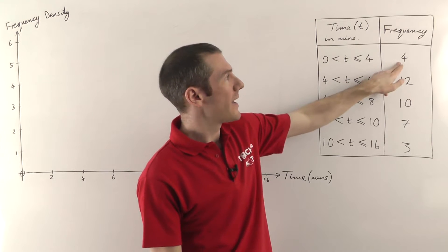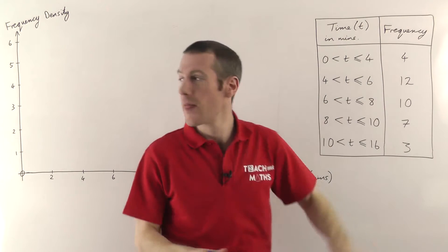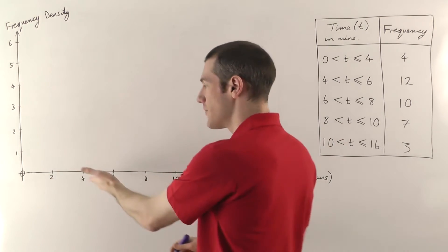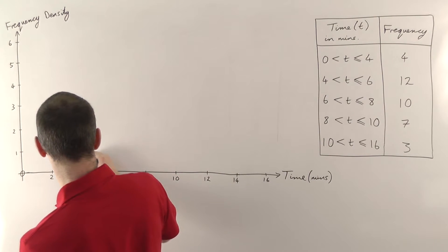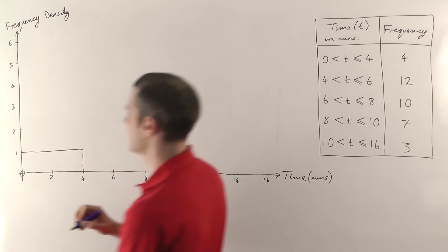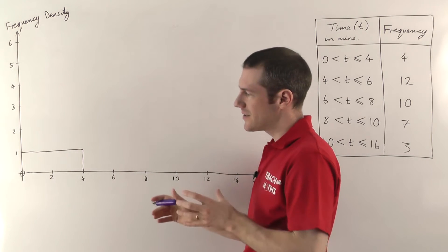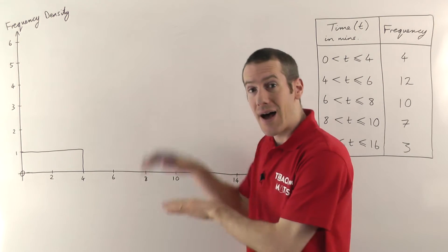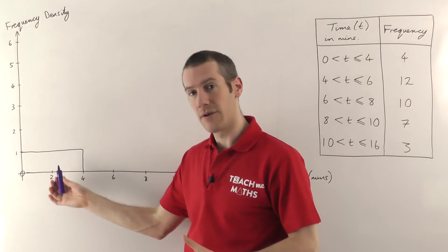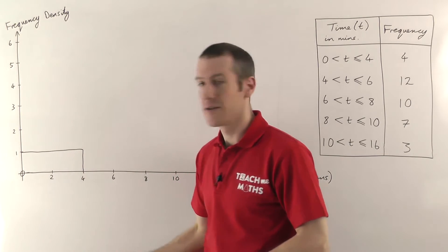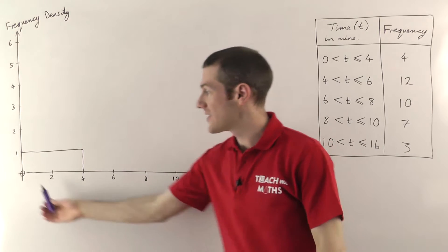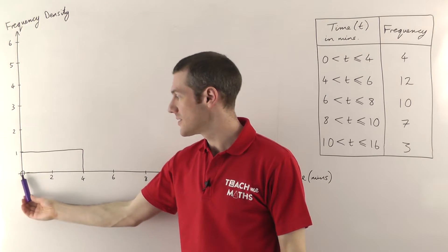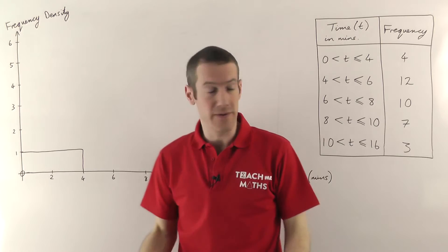So now we draw the bars in. The first one goes from 0 to 4, and it has a frequency of 4. On a histogram, the thing that represents how many people are in that group — the frequency — is not the height of the bar, it's the area of the bar. So we need the area of this bar to be 4. If it has a width of 4 (from 0 to 4), then I actually want the height to be 1, because 1 times 4 gives me an area of 4, which is the frequency we need.